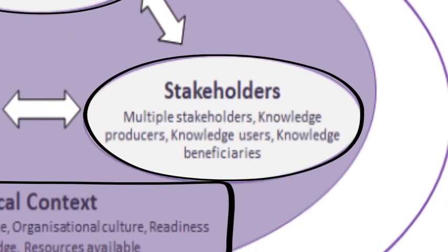Everyone identifies that knowledge transfer involves multiple stakeholders, but what we found interesting was that often the knowledge producers — the researchers — are left out of the equation. Yet we spend a lot of time talking to other researchers, and the ability to communicate with them is a key part. Knowledge users and beneficiaries are often mentioned, and we intentionally distinguish these two: the users are the practitioners, clinicians, and managers who make decisions based on research findings, while the beneficiaries ultimately are the service users and their families.